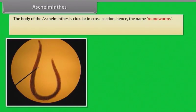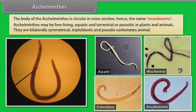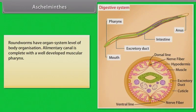The body of Aschelminthes is circular in cross-section, hence the name roundworms. Aschelminthes may be free-living, aquatic and terrestrial, or parasitic in plants and animals. They are bilaterally symmetrical, triploblastic and pseudocoelomate animals. Roundworms have organ system level of body organization.